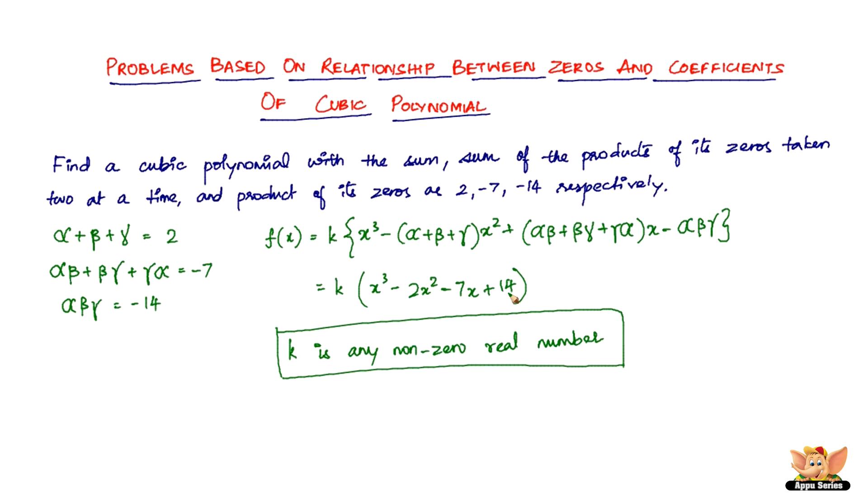This ends this problem and video. To find a cubic equation when information about zeros is given, just remember this formula and substitute the values - very similar to how we form a quadratic equation. I'll see you in the next video with another problem on the relationship between zeros and coefficients of cubic polynomials.